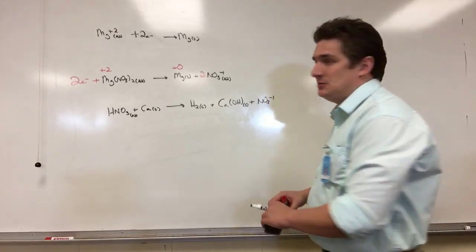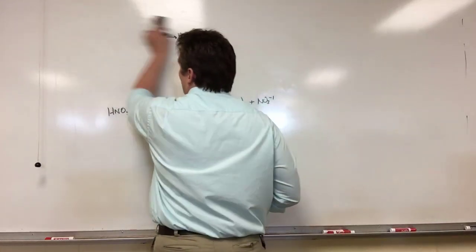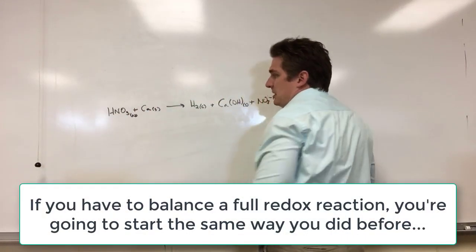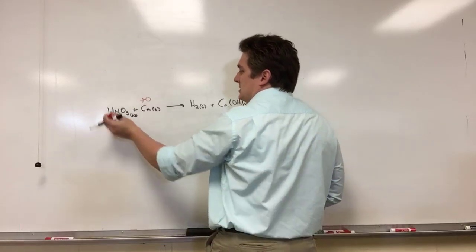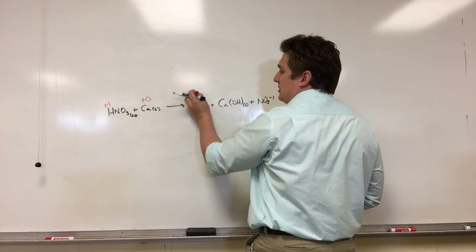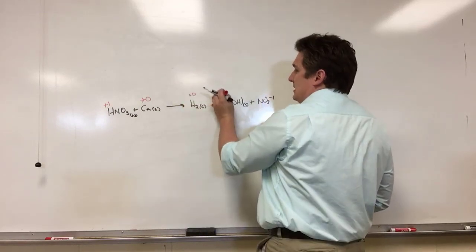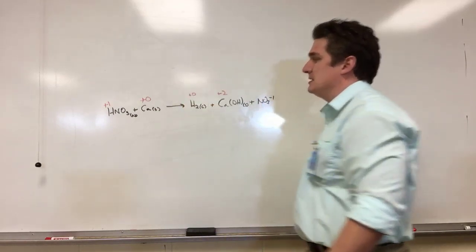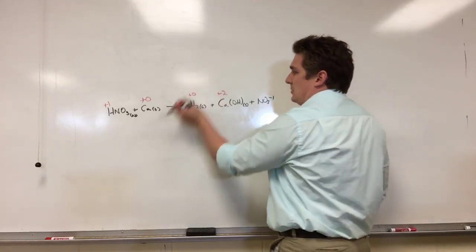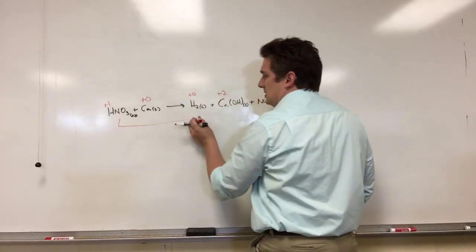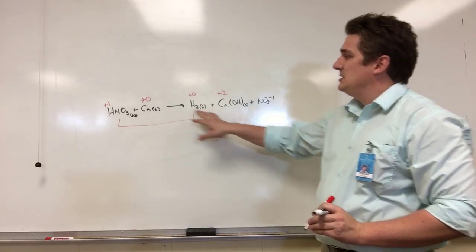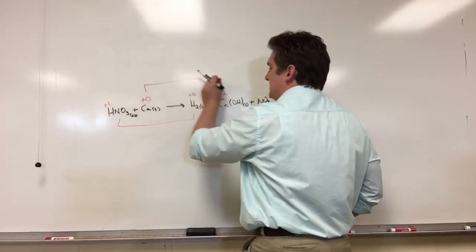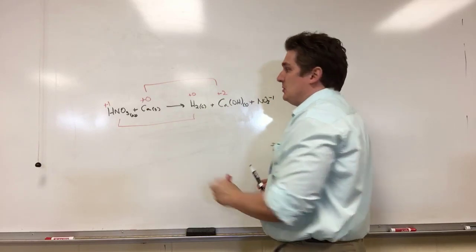Well, what you're going to do is the same thing you've always done before—go through and figure out oxidation states. So calcium here is in the zero oxidation state, hydrogen is in a +1 oxidation state. Hydrogen is going to go to a zero oxidation state in H2, and calcium is going to go to a +2 oxidation state. So our reduction couple here is HNO3 to H2, our oxidation couple is calcium to Ca(OH)2. You can balance them like you normally would.